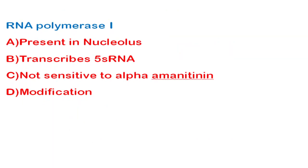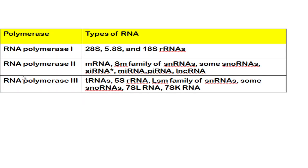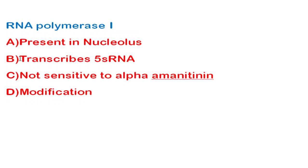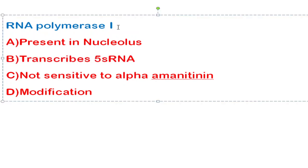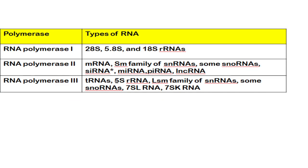The next question asks for the incorrect statement about RNA Polymerase 1. RNA Polymerase 1 is present in the nucleolus — correct. The statement that it transcribes 5S ribosomal RNA is incorrect; RNA Polymerase 1 transcribes 28S, 5.8S, and 18S ribosomal RNA. The 5S ribosomal RNA is actually transcribed by RNA Polymerase 3. So option B is the incorrect statement, making it the correct answer.